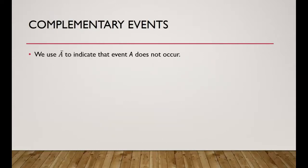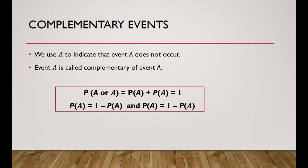Complement events are events that are mutually exclusive — they complement each other. We use a bar to indicate that event A does not occur. Event A-bar is called the complementary event of A. Because they are disjoint, we can use the addition rule: P(A or A-bar) = P(A) + P(A-bar) = 1. Therefore, P(A-bar) = 1 − P(A), and vice versa, P(A) = 1 − P(A-bar).